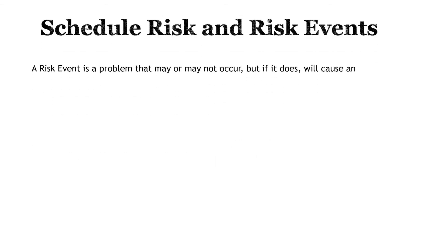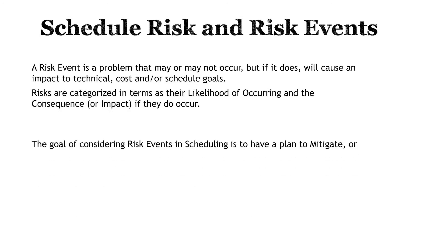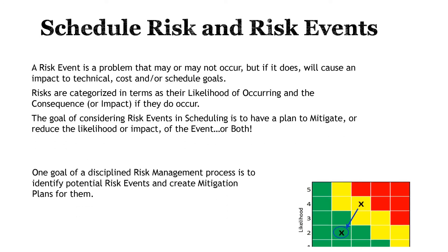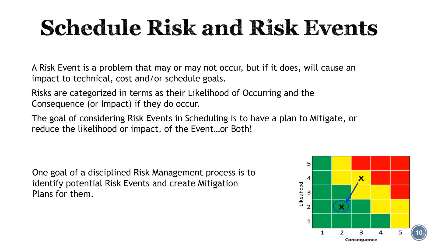The statistically-based SRA focuses on duration uncertainty in the schedule. Another source of schedule risk is unplanned project events. There are an endless set of examples for unplanned risks, such as material shortages, weather delays, and subcontracting, to name a few. Risk events are typically quantified in two dimensions: likelihood and consequence. Risk events have a less than 100% likelihood of occurring, or else they would have been planned in the baseline schedule. But if they do occur, there will be a consequence to downstream tasks, an increased cost, or a change to the technical expectations of the project. The goal of considering risk events in scheduling is to have plans in place which reduce the likelihood or impact of the event, or both. One of the primary goals of a disciplined risk management process is to identify these risk events and develop mitigation plans to deal with them.